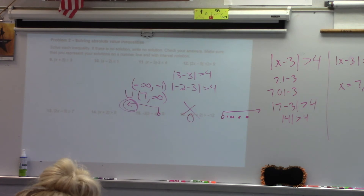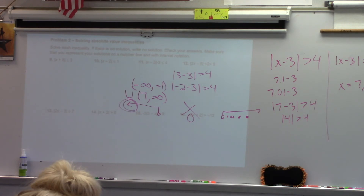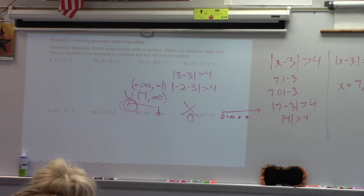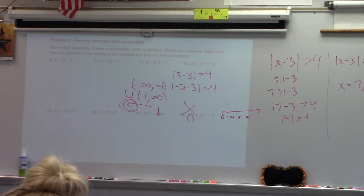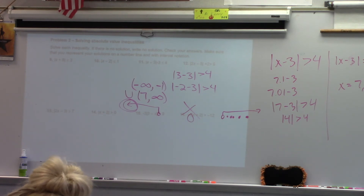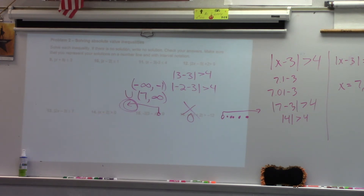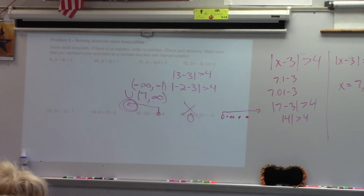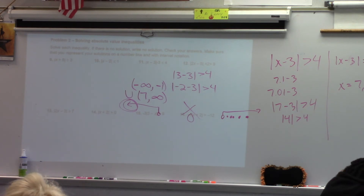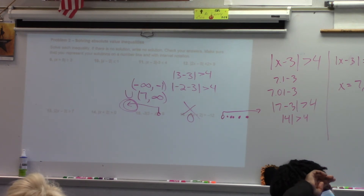Would it be a bracket or a parenthesis at negative infinity? Can't equal infinity, so parenthesis. Then negative 11 gets a bracket because it's included. Then put a U there — it's called a union, it puts those two intervals together. Where does the other interval start? Negative 5 with a bracket, comma, positive infinity with a parenthesis.